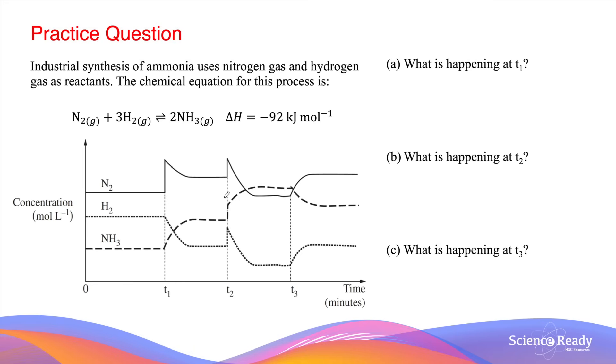Vice versa, if you see the graph and all the three concentrations will decrease instead, that will suggest a decrease in pressure or an increase in volume.